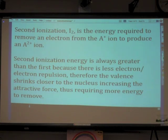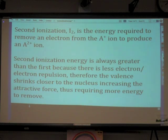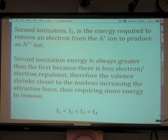The attractive force of the nucleus is very much like gravity — the shorter the distance, the greater the attractive force between the two. So the closer the electron is to the nucleus, the more energy it's going to take to remove a valence electron. The trend is clear: the first ionization is always less than the second, which is always less than the third, less than the fourth, and so on. Every subsequent electron removed requires more and more energy.